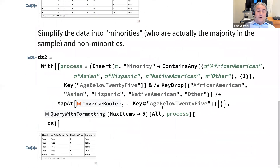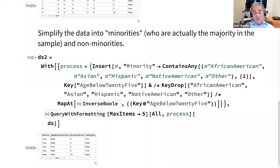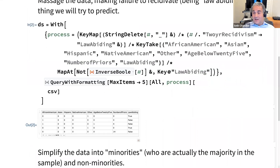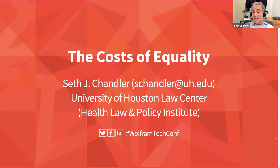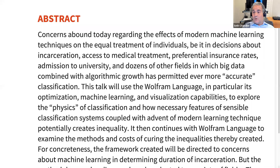We're going to separate our data into what are called minorities — an American term for ethnic and racial groups that constitute a minority in the overall population, such as persons of African descent, Asians, Hispanics, and Native Americans. However, for the imprisoned population in Broward County, they're actually a majority of that population. Nonetheless, I will refer to them as minorities and everyone else as majority. We've split the data into majority and minority.